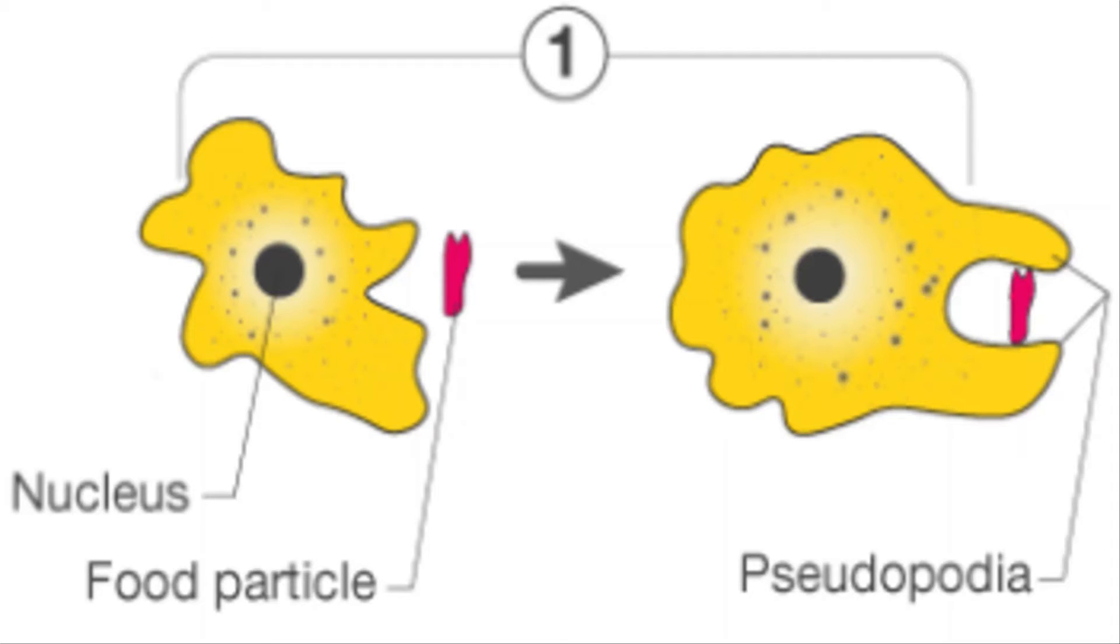Ingestion: Ingestion is the process of taking in the food into the body either by swallowing or absorbing it. Amoeba pushes out the pseudopodia to encircle the food and engulfs it in the form of food vacuole. This process is known as phagocytosis.